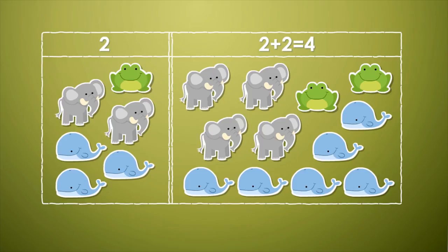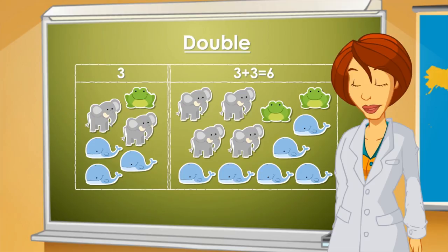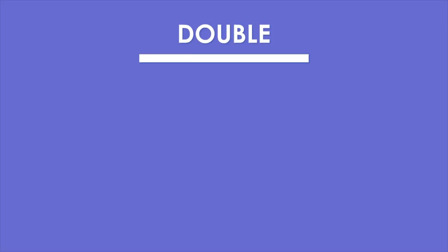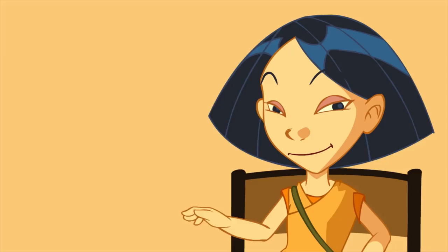What about the whales? It's the same, because there are three whales in the first column and there are six in the other column. Three plus three equals six. So, if I add up twice the same number, I'll get the double of that number.